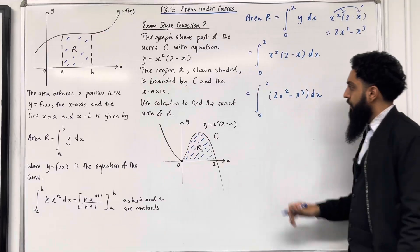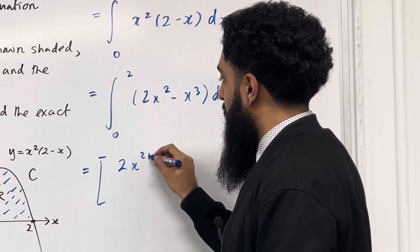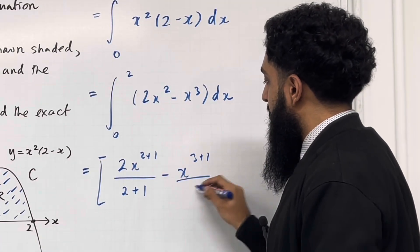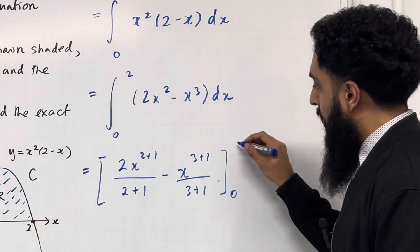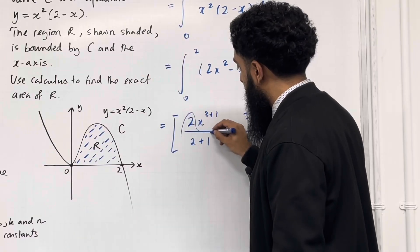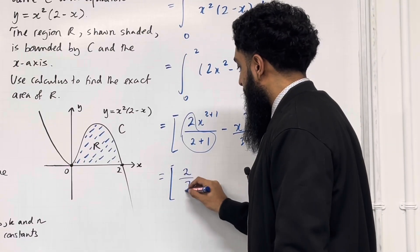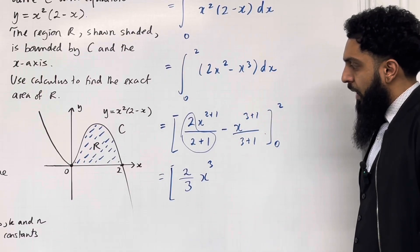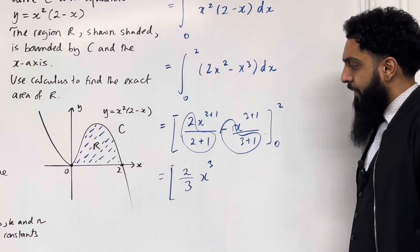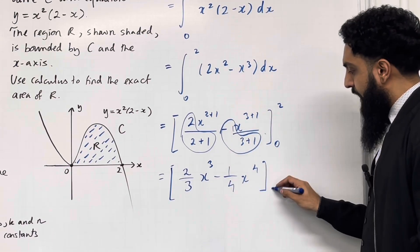We can now integrate term by term. Open square bracket: for the first term, we get 2x to the power 2+1 divided by 2+1; second term, minus x to the power 3+1 divided by 3+1. Close square bracket, lower limit 0, upper limit 2. Simplifying: 2 divided by 3 gives 2/3 — x to the power 3; minus 1/4 — x to the power 4. Now substituting the upper limit, replace the x's with 2. Then take away and substitute the lower limit, replace the x's with 0.